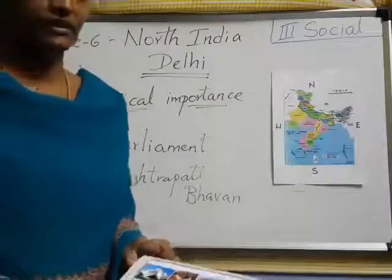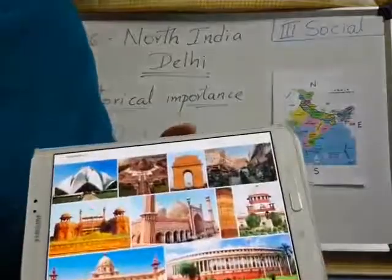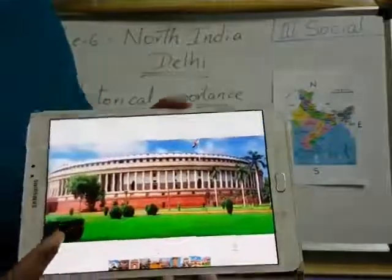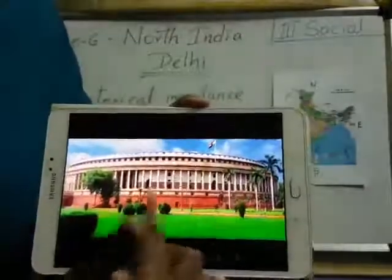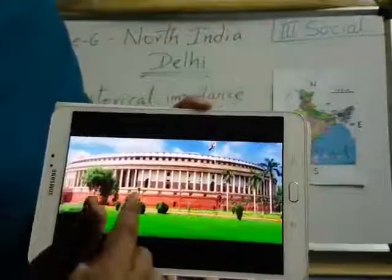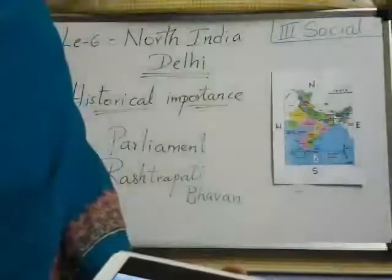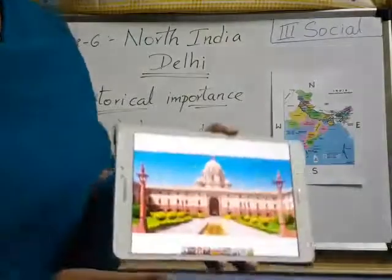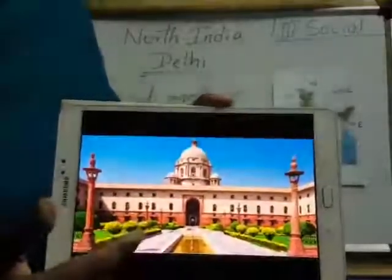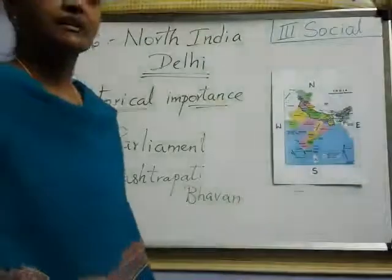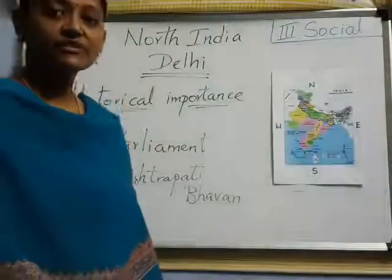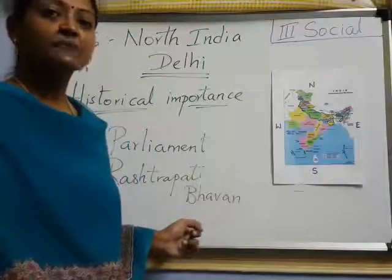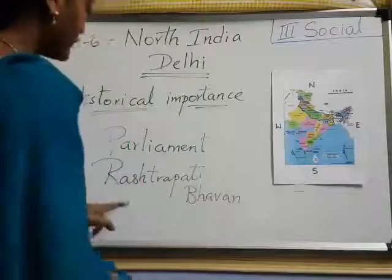These are some pictures of important monuments in Delhi. Now look here — this is our Parliament. Have you seen it in the news channels and on TV? This is Parliament. And next one — look here, another picture. This is Rashtrapati Bhavan. In this Bhavan only — who lives, do you know? Who lives in this place? Our President — the President of India lives in the Rashtrapati Bhavan. Remember — who lives in Rashtrapati Bhavan? President of India.